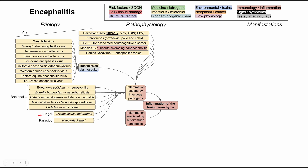Even less common are fungal and parasitic etiologies. The major fungus that causes encephalitis, though rare, is Cryptococcus neoformans. The major parasite is Naegleria fowleri, which lives in warm or tepid fresh bodies of water such as lakes and streams. You want to avoid getting water in your nose in those environments to avoid this brain-eating amoeba.